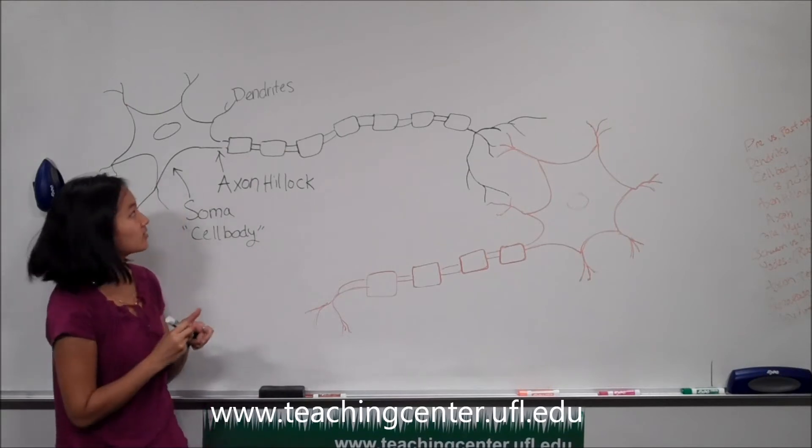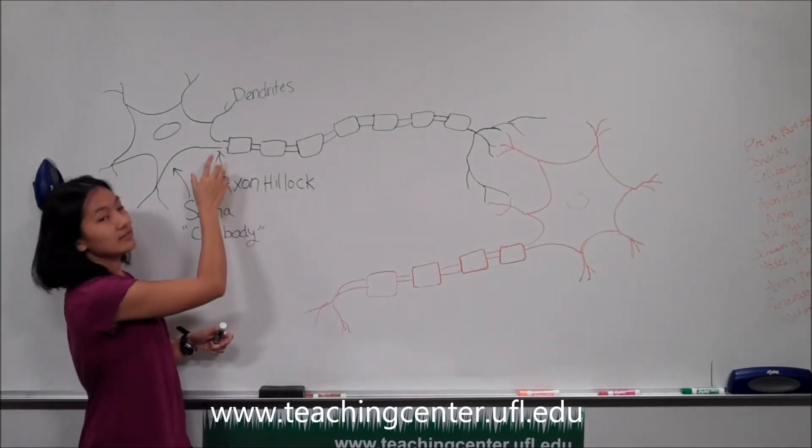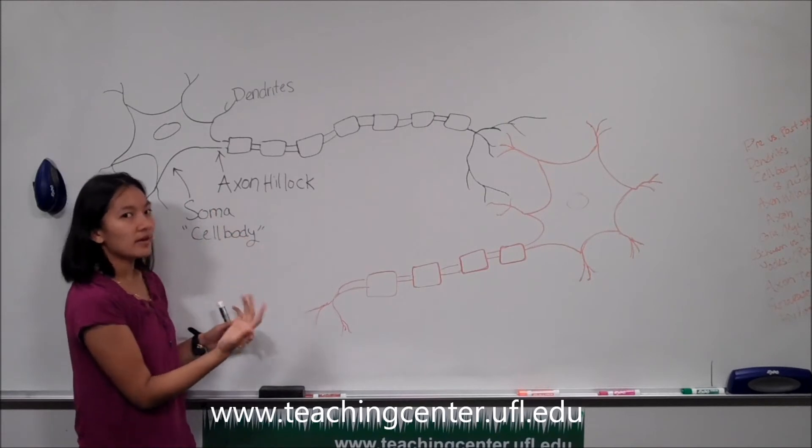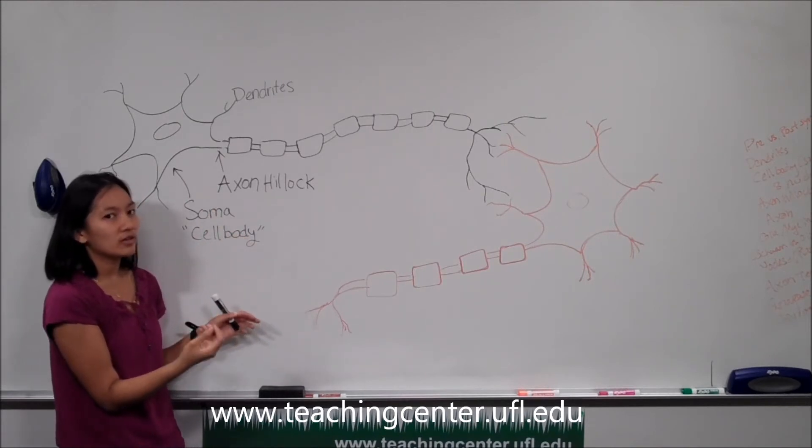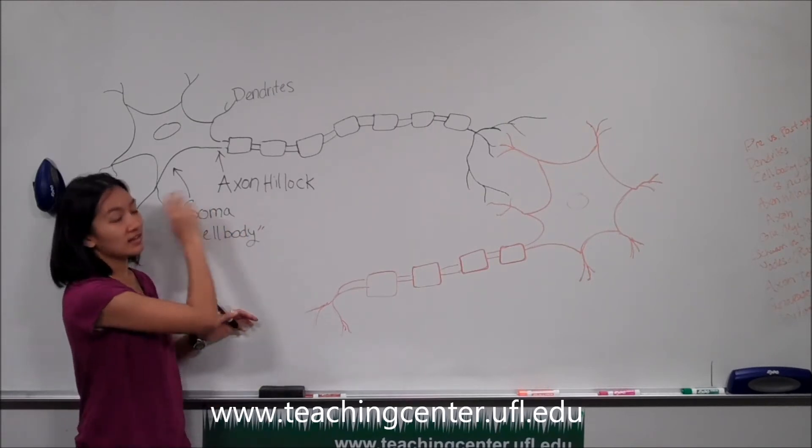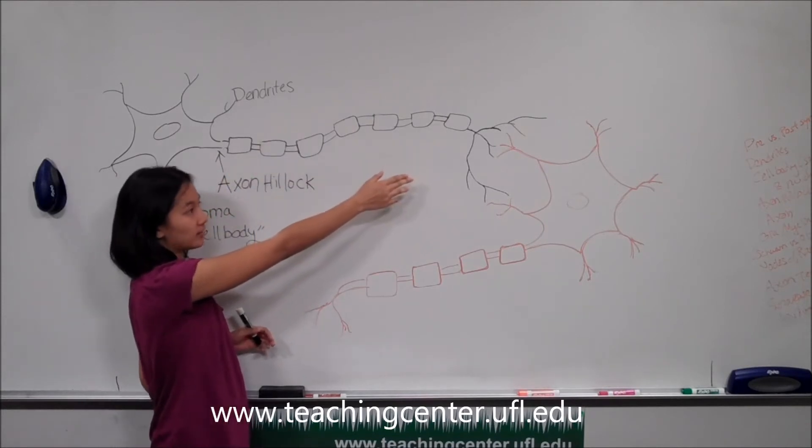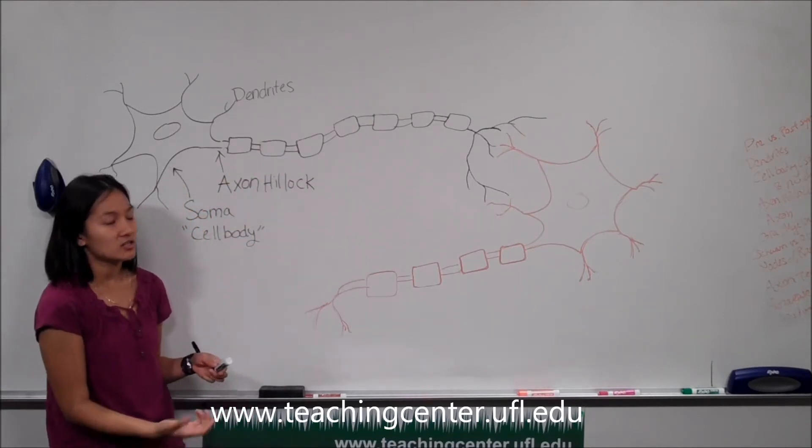So it is here at the axon hillock that adds up all the signals that the dendrites picked up and determines whether or not we'll be able to send an electrical impulse throughout the axon, also known as an action potential.